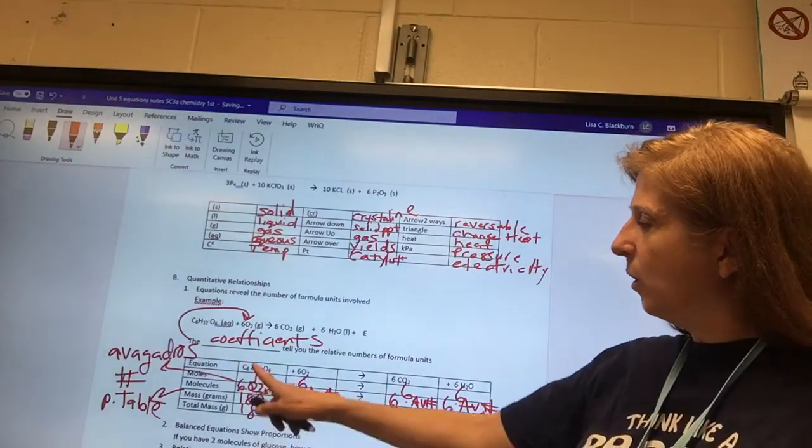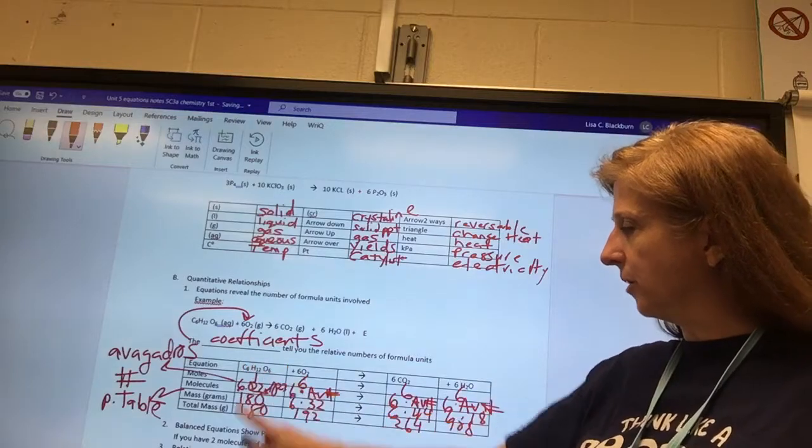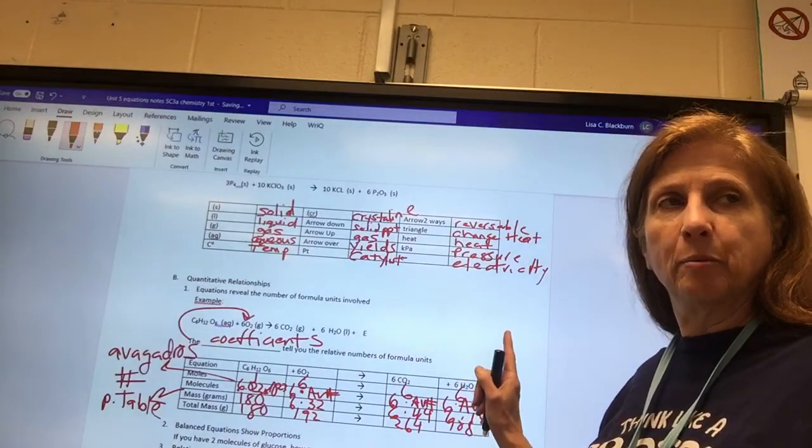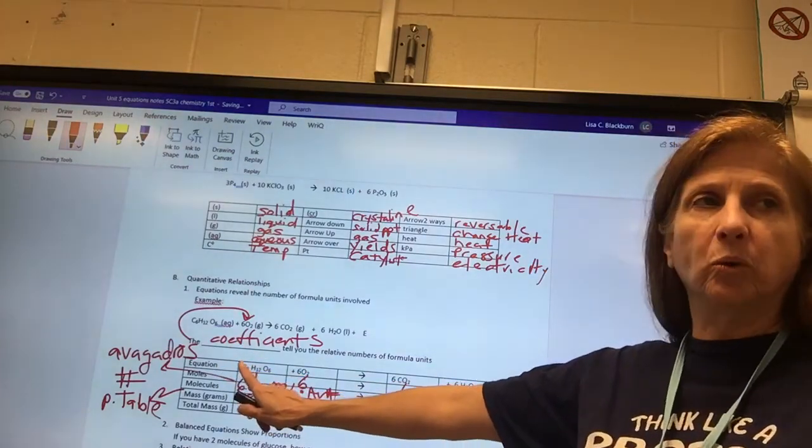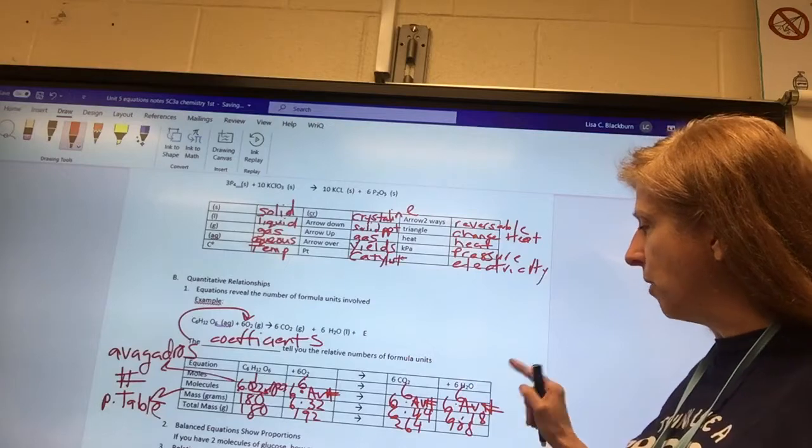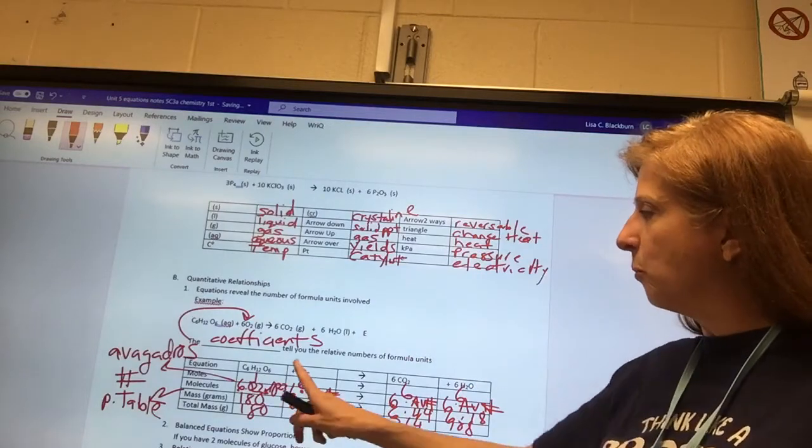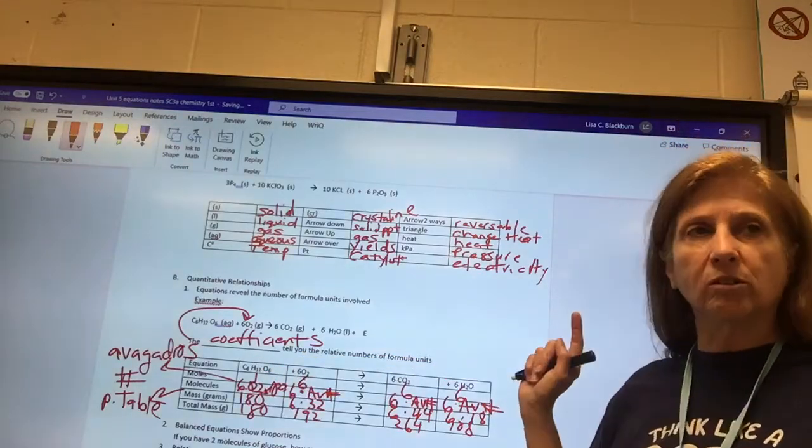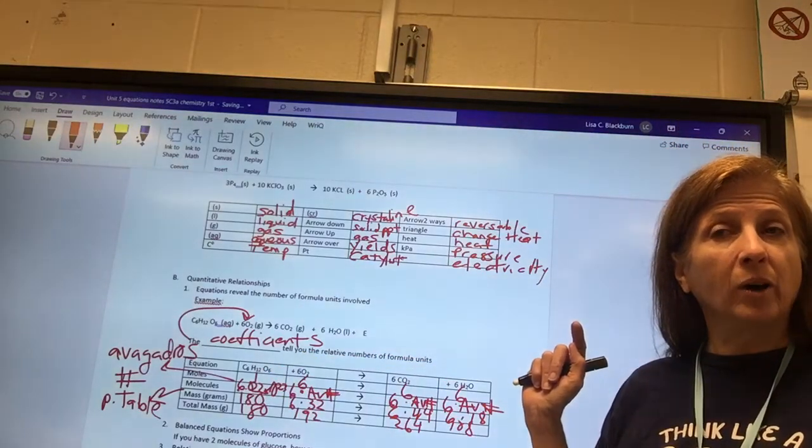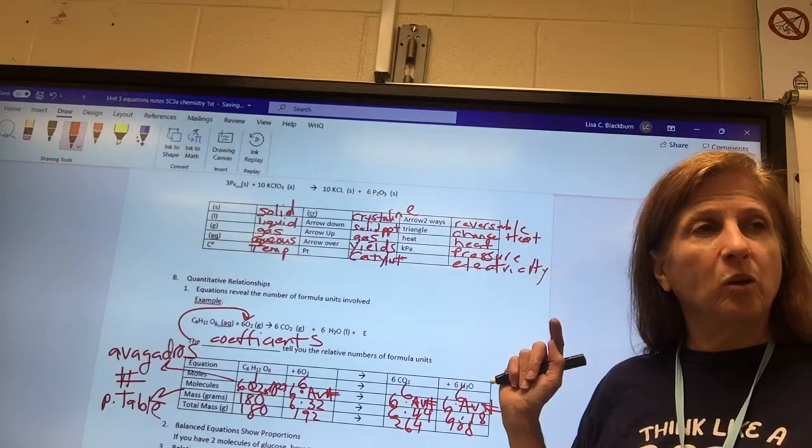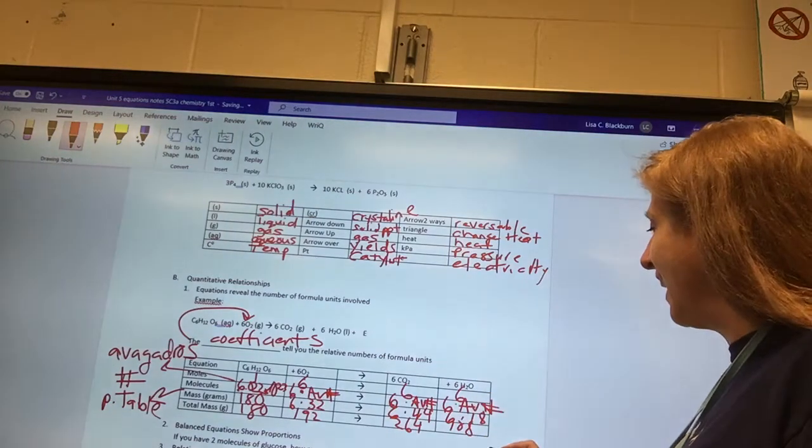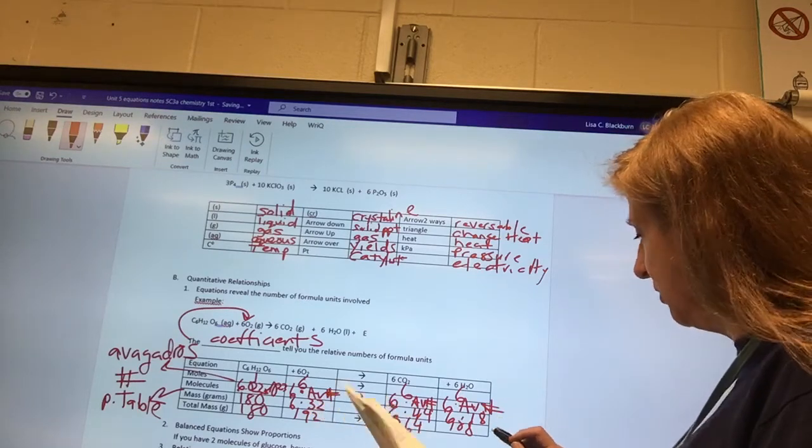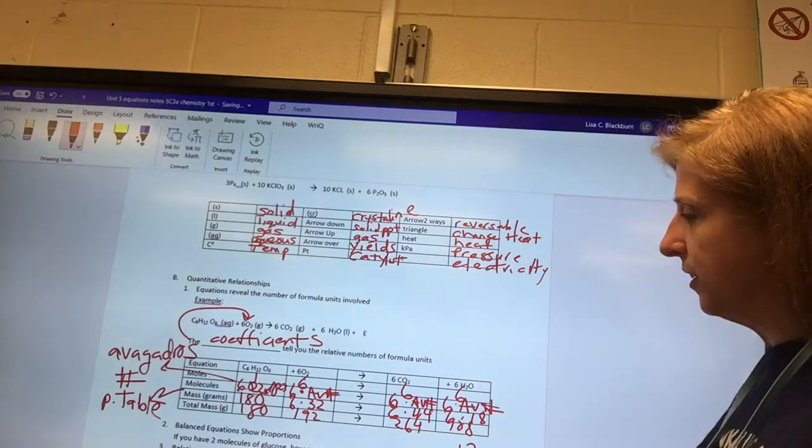We had one glucose here, six of water. The number in front of the glucose is one. The number in front of the water is six. So what if you had two instead of glucose, how many waters would you have? If you had two, you would have 12.